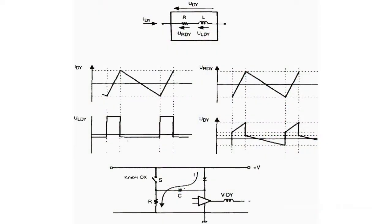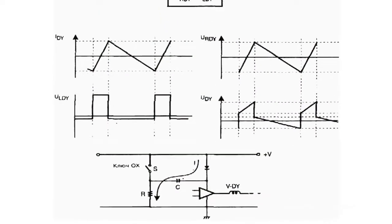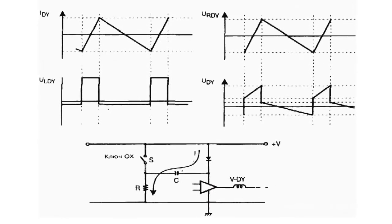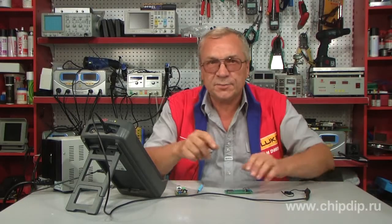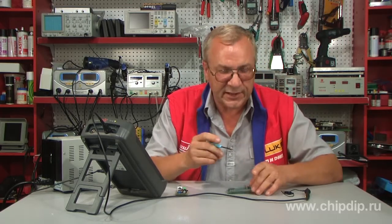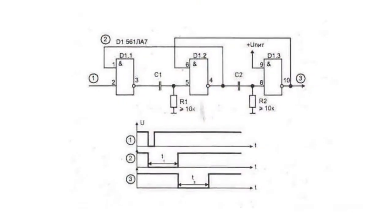Such pulse shapers are usually made as integral circuits on the basis of DC amplifiers. One example is designing a pulse shaper on the 561LA7 microchip.